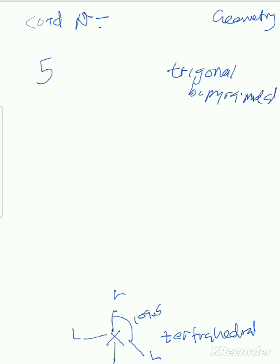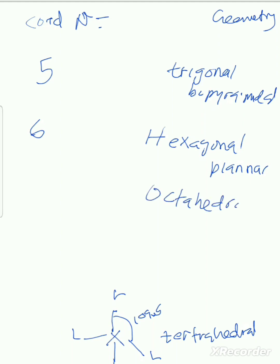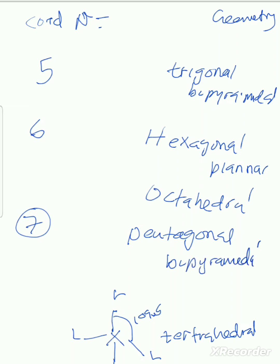Trigonal bipyramidal is the structure when you have a coordination number of five. When you have six, that is known as octahedral — or sometimes called hexagonal planar. For coordination number seven, the geometry is pentagonal bipyramidal.